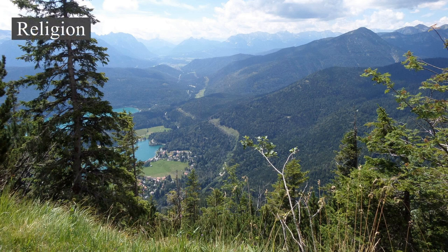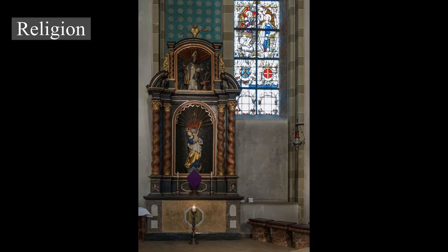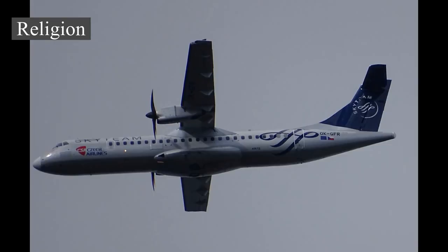Languages: German is the official and predominant spoken language in Germany. It is one of 24 official and working languages of the European Union and one of the three procedural languages of the European Commission. German is the most widely spoken first language in the European Union, with around 100 million native speakers. Recognized native minority languages in Germany are Danish, Low German, Low Rhenish, Sorbian, Romani, North Frisian, and Saterland Frisian, officially protected by the European Charter for Regional or Minority Languages. The most used immigrant languages are Turkish, Arabic, Kurdish, Polish, Greek, Serbo-Croatian, Bulgarian, and Russian. 67% of German citizens claim to be able to communicate in at least one foreign language and 27% in at least two.